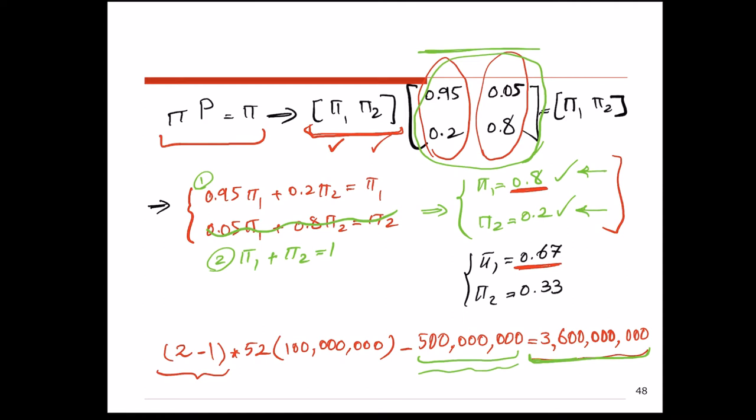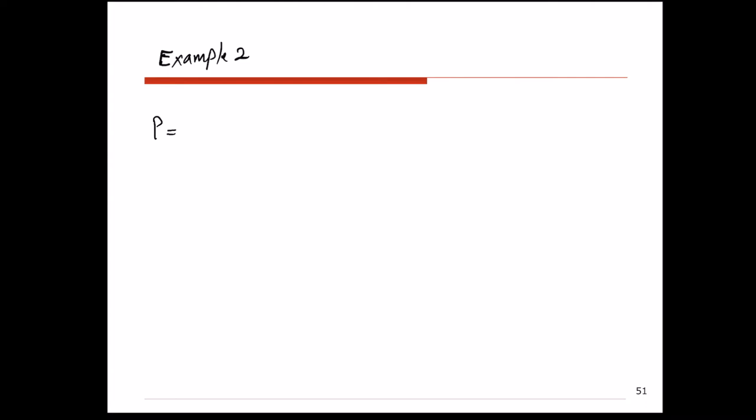This was one example of how the concept of stochastic processes and steady-state properties can be used in a marketing analysis. In the second example, we are going to look at a three-by-three one-step transition probability matrix.